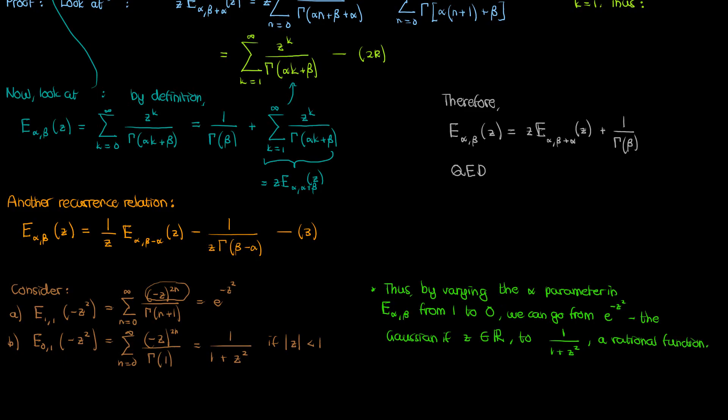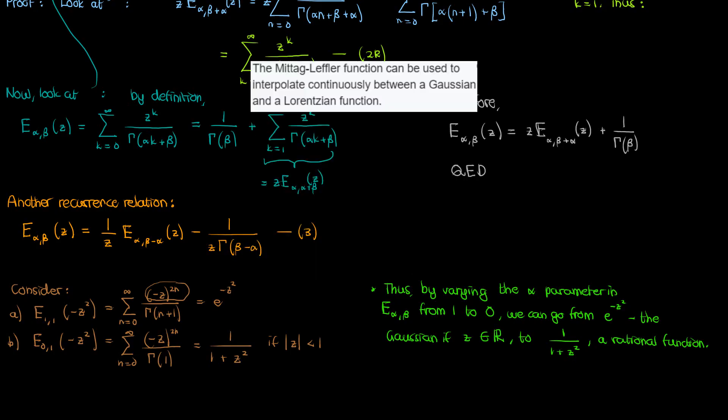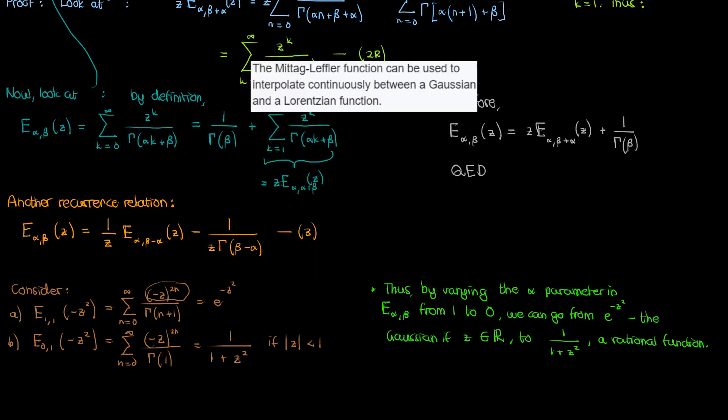Assuming z is purely a real number, this is what it will look like as you vary the alpha from 1 to 0. You go from this negative z squared exponential, this Gaussian, to this rational function, and that's why the caption says the Mittag-Leffler function can be used to interpolate between this Gaussian and this rational function.